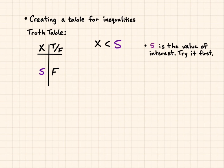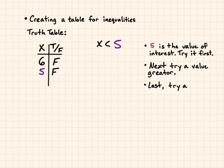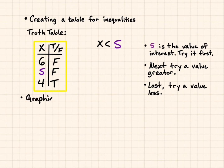Then, try a value above the value of interest — a value greater. If x is 6, then 6 is not less than 5, so that's false, and I can put an F for false in the truth table. Last, try a value less than: 4 is less than 5 — that's true. Now, a truth table will help you with graphing. So when looking at graphing an inequality, first draw your number line.